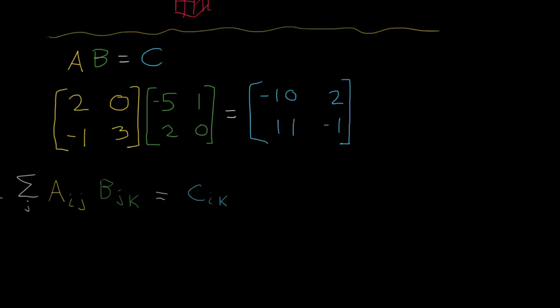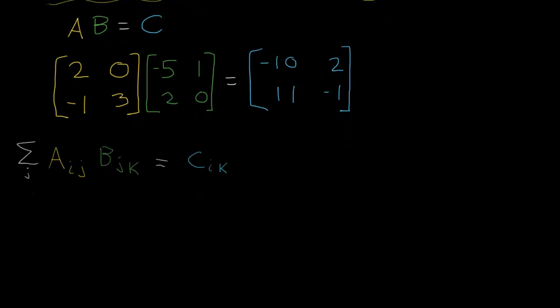So this equation right here with the indices is telling us how to get a certain element of C from elements of A and B. So let's look at C11, taking things one at a time. So C11, what is this? So that means I is one and K is one.